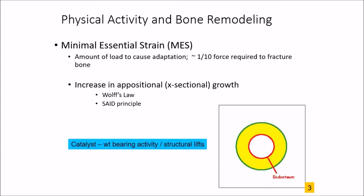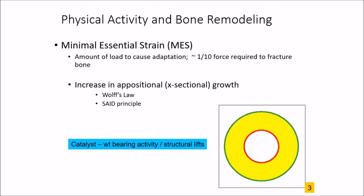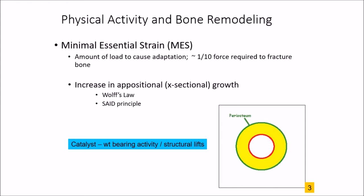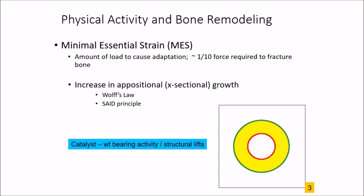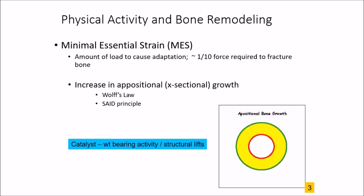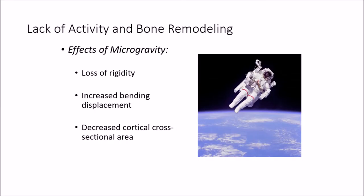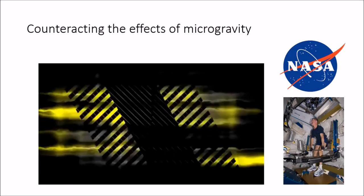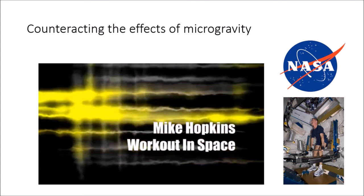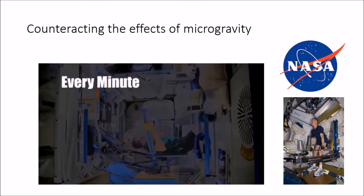The catalyst for this would be weight-bearing activities and structural lifts like heavy squats or deadlifts. Doing three sets of 12 at an incredibly light weight wouldn't provide enough structural catalyst to cause an increase in cross-sectional area. However, for those who might work in a physical therapy clinic or as strength and conditioning coaches, doing heavier loads — perhaps closer to 80 to 90 percent of one rep max for lower reps — would definitely reach the minimal essential strain to cause an increase in cross-sectional area. What about situations where there's a lack of gravity or where this catalyst is not available, such as for astronauts in space? Typical effects of microgravity are loss of bone rigidity, an increase of bending, and a decreased cortical bone cross-sectional area.